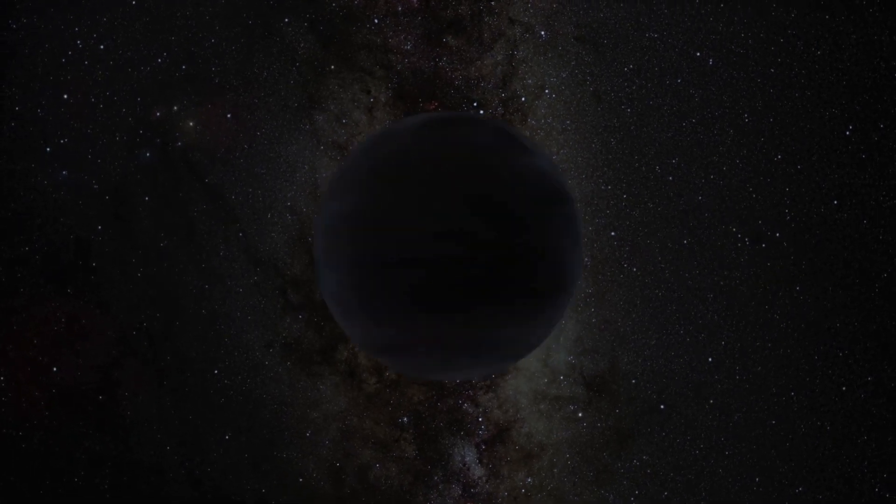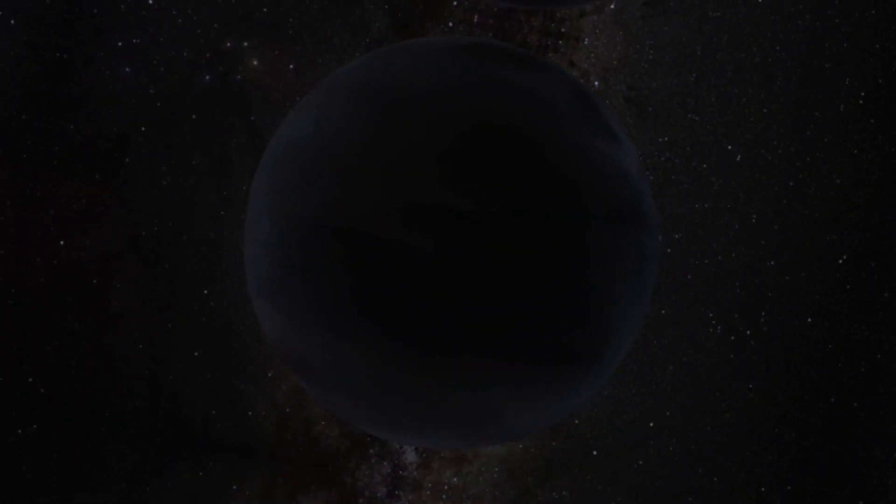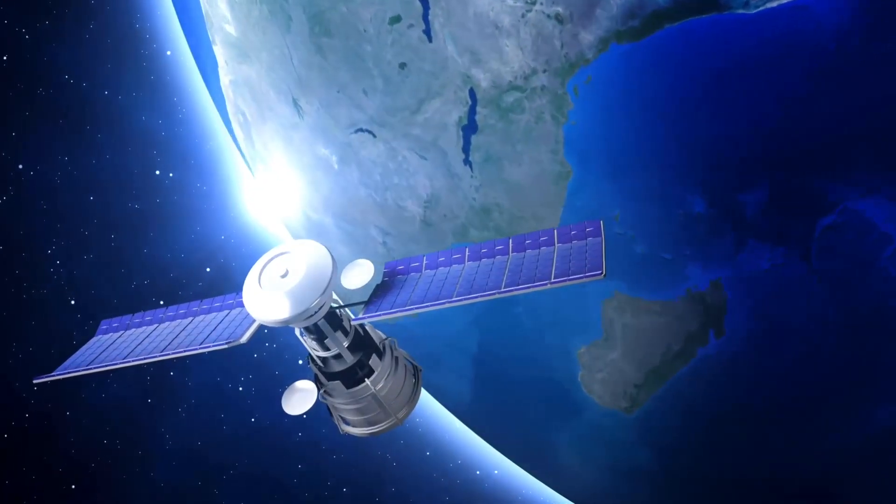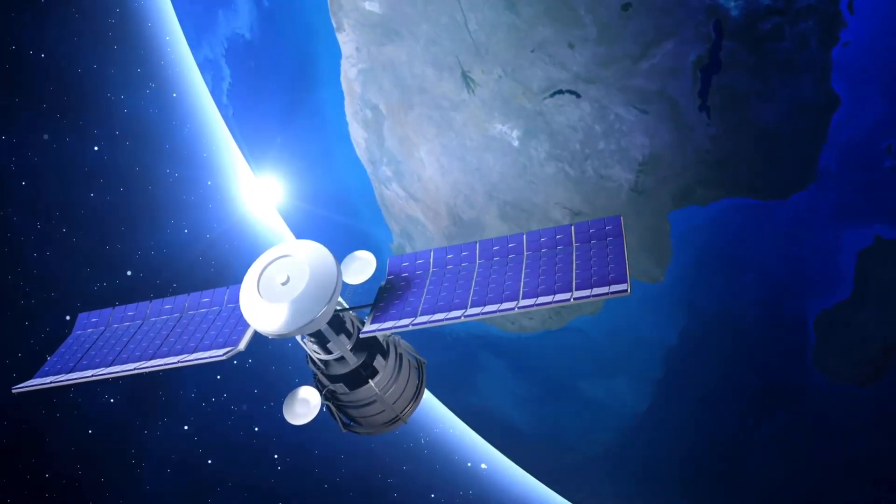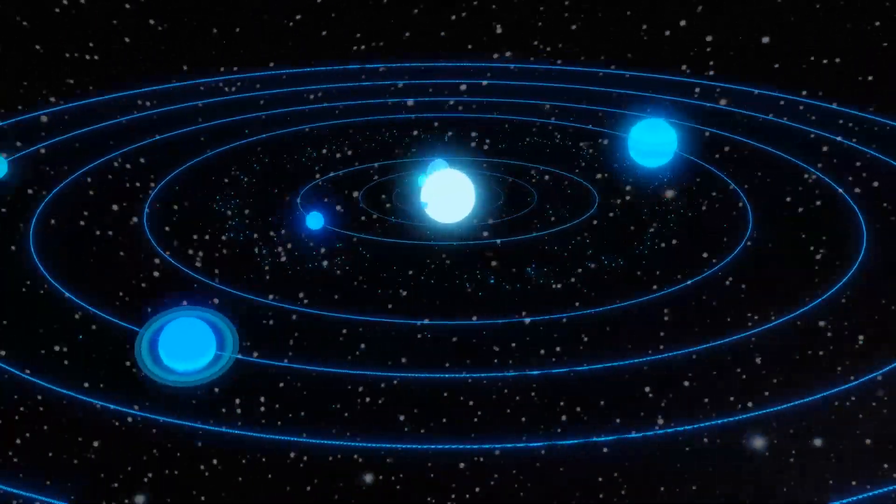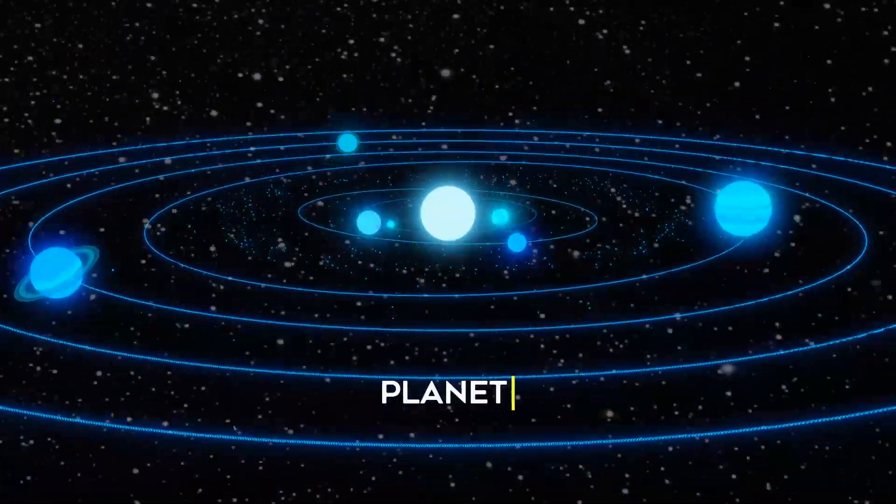Could there be an enormous world lurking in our midst? Astronomers are increasingly certain that there is a ninth planet orbiting the Sun, far out beyond Neptune, a so-called Planet Nine.